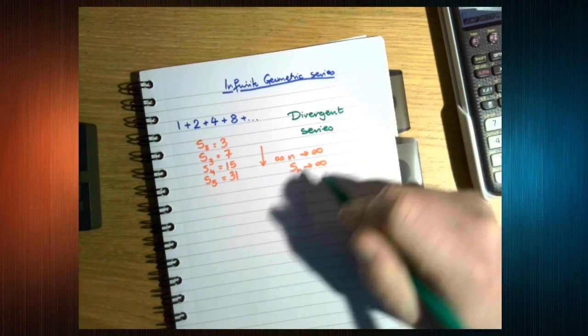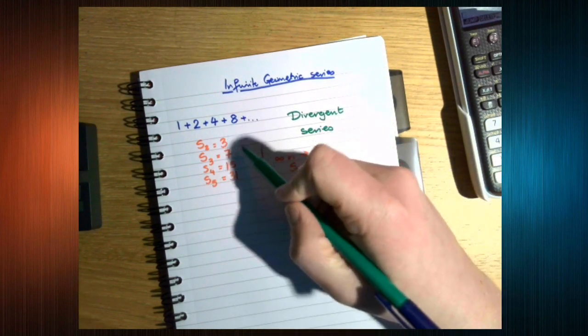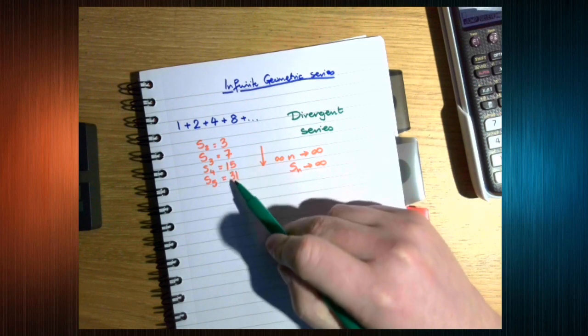Why is it divergent? What makes these numbers just get bigger and bigger?